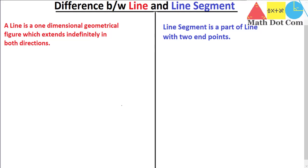So, line segment and line are related to each other in such a way that line segment is a subset of the line. The definition has cleared the concept: a line is a geometrical figure that extends indefinitely in both directions having only length, while a line segment is a part of that line. You can get the line segment from the line. Line segment is a part of line with two endpoints.